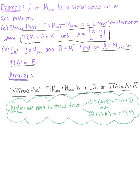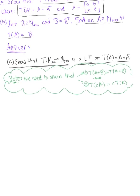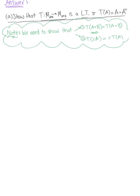In Part A, we need to do two things to guarantee that this is a linear transformation. Case 1: show that T(A + B) = T(A) + T(B). Case 2: show that T(cA) = c·T(A) for any scalar c. These two conditions will confirm that we have a linear transformation.